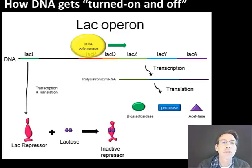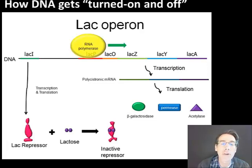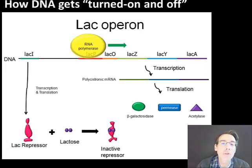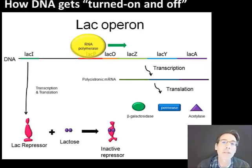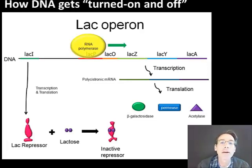So let's first explore the lac operon. The lac operon is a series of genes that are found in bacteria, such as E. coli, which live in your large intestine. Normally, let's say these E. coli may not have access to a sugar found in milk called lactose, so they would want to turn that gene off. Why go through the process of transcription and translation and make proteins — enzymes, for example — involved in the breakdown of the sugar lactose if it's not present?